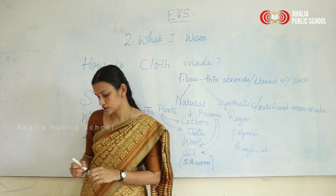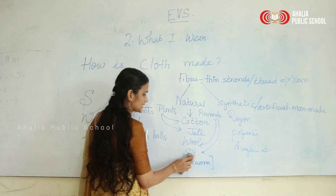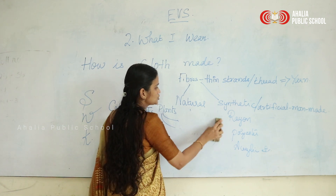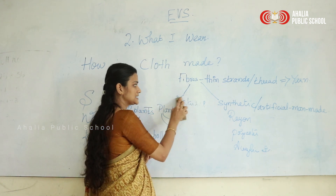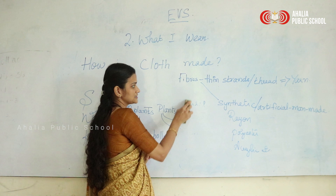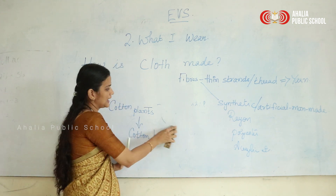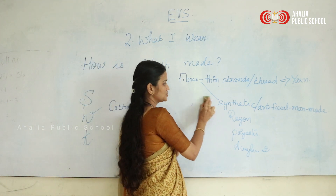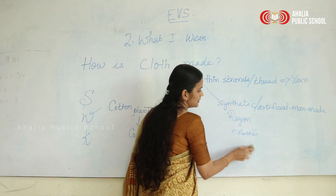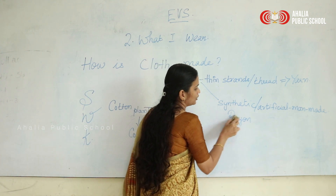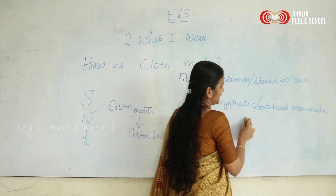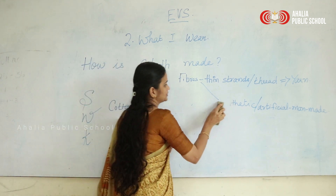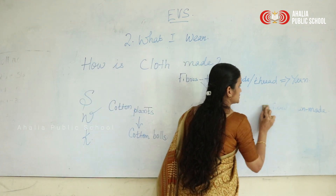So these are the things you get from nature — either from plants or animals — and there are different techniques used to make cloth that we will learn in this lesson. Just understand there are two kinds of fibers: natural, from nature, and synthetic, which is man-made or artificial, done inside a factory.